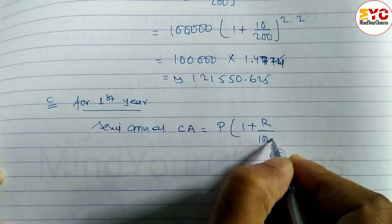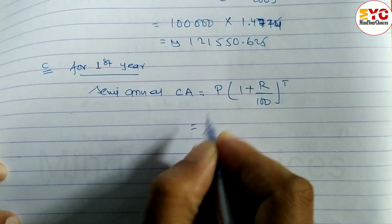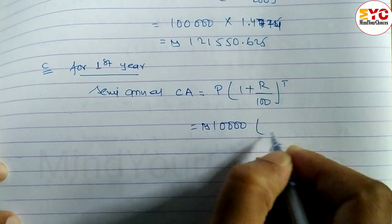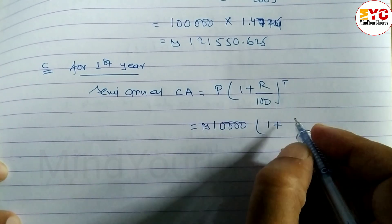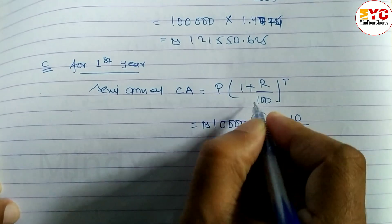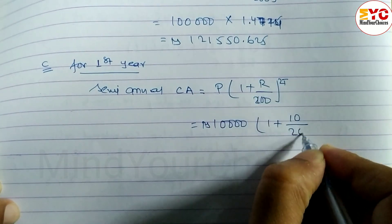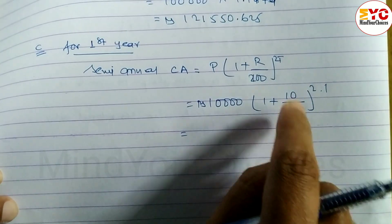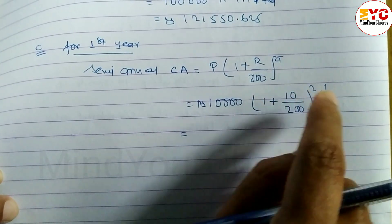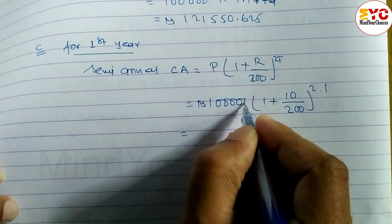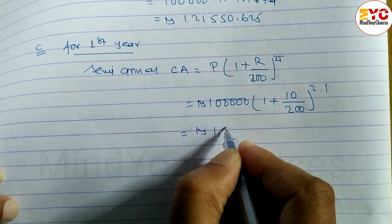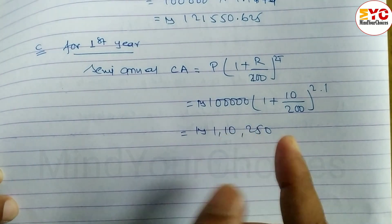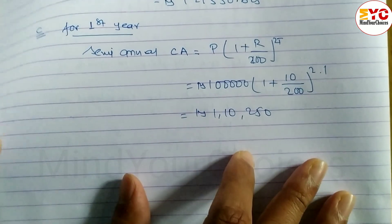So, for the semi-annual period of 1 year: A = P × (1 + r/200)^(2t) = 1 lakh × (1 + 10/200)^(2×1) = 1 lakh × (1.05)^2 = Rs. 1,10,250. He gets this amount after the first year with half-yearly compounding, and now takes this amount to invest for the next year.